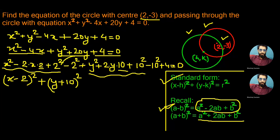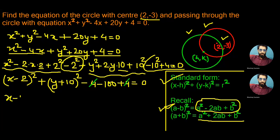Now let's write the remaining terms. -2² equals -4, and -10² equals -100, plus 4 = 0. We can cancel +4 and -4 since they are equal and opposite. The equation becomes (x - 2)² + (y + 10)² - 100 = 0, and taking -100 to the right side gives us (x - 2)² + (y + 10)² = 100 = 10².